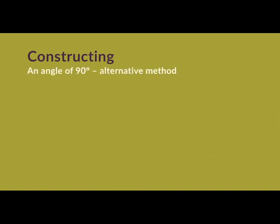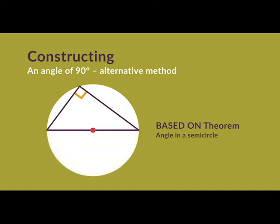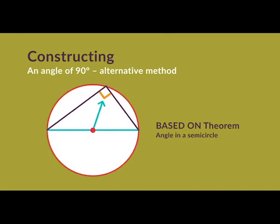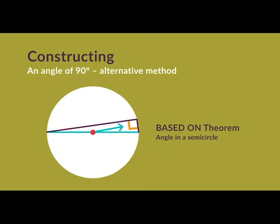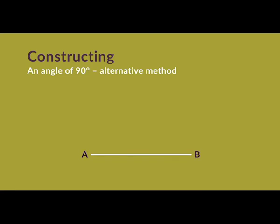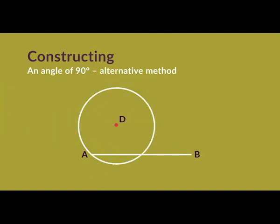Another method for constructing a right angle is based on the circle geometry theorem that the angle in a semicircle is a right angle — if a diameter subtends an angle at any point on the circumference, that angle is 90 degrees. Step 1: draw a line segment AB of any length; this becomes one arm of the angle with A as vertex. Step 2: mark a point D above AB. Step 3: set the compasses on D with width DA and draw a circle — it intersects AB at C. Step 4: draw a diameter CE through centre D. Step 5: draw a line through E and A. The angle EAC is 90 degrees.